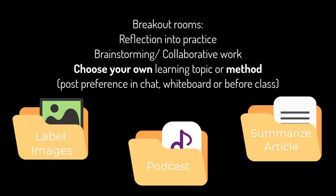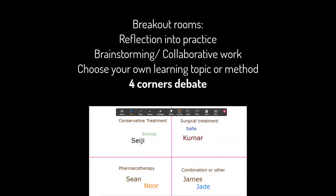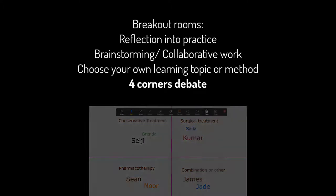Allow learners to choose between different learning methods on the same topic, such as having video, hands-on activity, and group discussion in different rooms. Four Corners Debate: have learners choose between four different breakouts based on different treatment options or other debate topics. Learner groups can then look up the evidence and develop arguments. After large group debate, polls or chat can be used to see if opinions were changed.